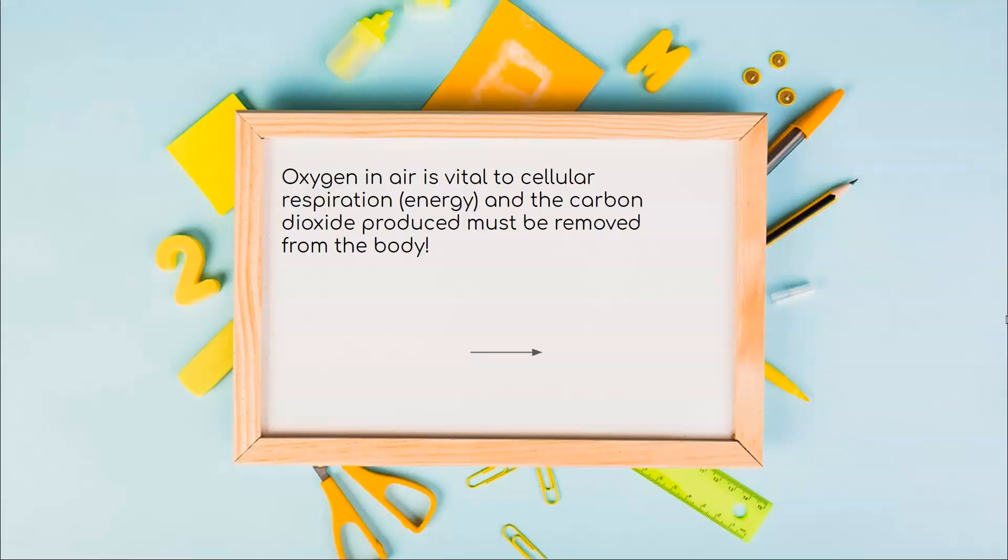I've already stated this earlier, but we need to remind ourselves that oxygen in the air is very vital to cellular respiration for us to be able to get energy. And when we do cellular respiration, we produce carbon dioxide which is a waste, which is a product that can hurt us. So it has to be removed from the body. We want to remember this as we talk about the key parts of respiration. Why are we talking about respiration? We're talking about it because breathing in brings us the much needed oxygen we need and breathing out removes all that carbon dioxide.